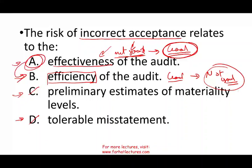Incorrect acceptance means you accepted that the control is good, but in reality it's not. So the answer is A — effectiveness. It's going to influence the effectiveness of the audit, which is the more dangerous problem. Incorrect rejection means you're not efficient — you do more work than needed, which is not a big deal compared to relying on a control that isn't working. Therefore, the risk of incorrect acceptance deals with effectiveness, and incorrect rejection deals with efficiency.